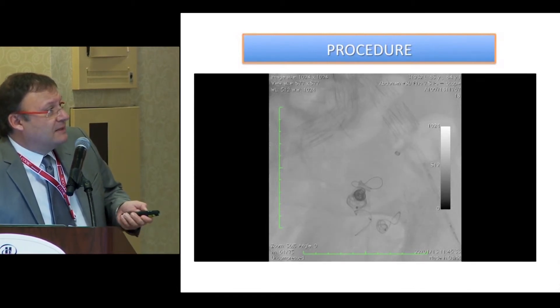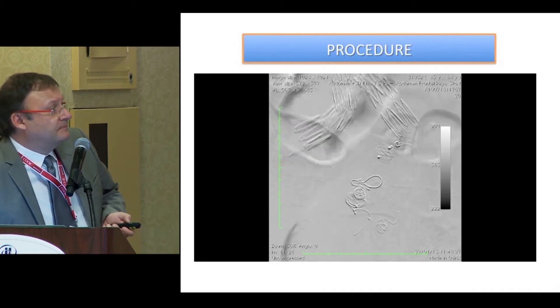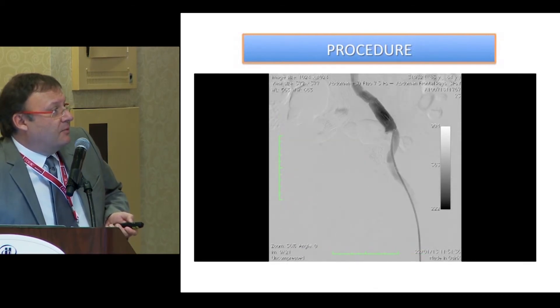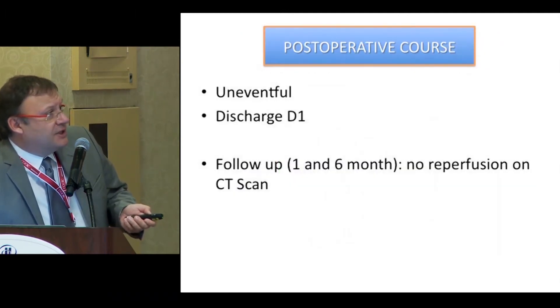You can see that we were very stable in the aneurysm. We had no more distal perfusion, we had some clots, and we placed the sheath at the ostium of the iliac.